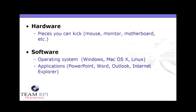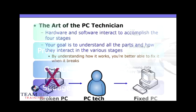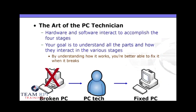So how does the computer work? It's basically a collection of hardware and software. Hardware is the stuff that you kick, like your mouse, your monitor, or your keyboard. Software is what you interact with — it's the operating system, whether it's Windows, Mac, or Linux, as well as the applications that make PCs useful. The basics of operating a PC is essentially input from a keyboard, mouse, or possibly a webcam, the processing of that information, and then the output and storage of that information. A good PC technician understands all of these parts and how they interact — how to take a broken, malfunctioning PC and turn it into a happy, fixed PC.